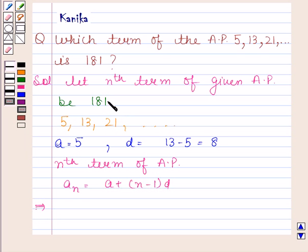We have assumed that nth term of this AP is 181. So we have 181 equals A plus (N minus 1) times D, where A is 5 and D is 8.